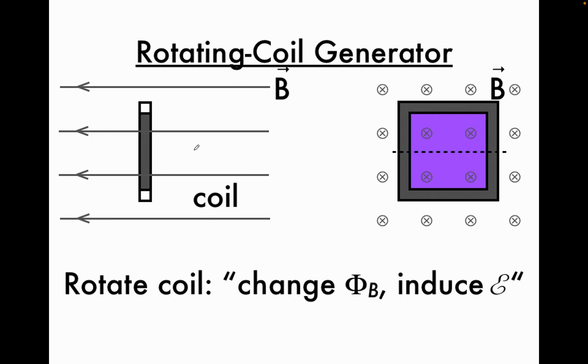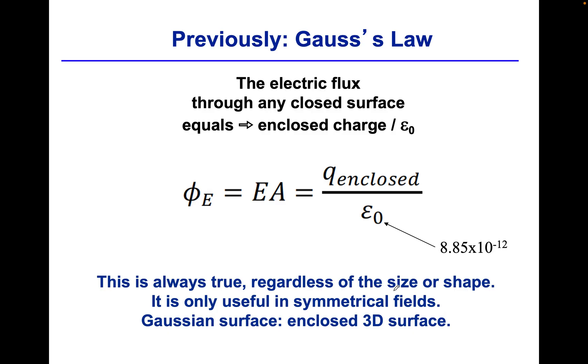So a rotating coil generator simply means this will spin. As it spins, I am changing the flux, the number of lines. That will induce a voltage which will drive a current. So we can have a current flowing through here.